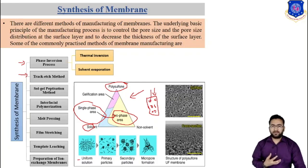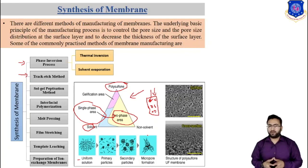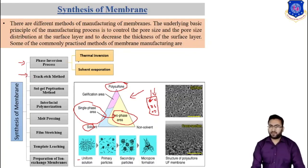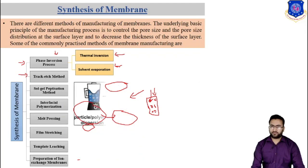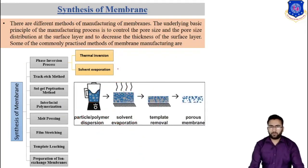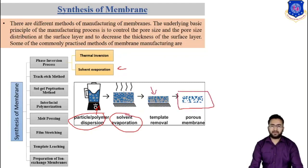If we remove this liquid, we will get pores on the membrane and we get a porous membrane. Now regarding the phase inversion process, there are various methods such as thermal inversion and solvent inversion process. In the solvent evaporation process, a particle and polymer dispersion solution is mixed to make an emulsion, then solvent evaporation takes place and we get pores, resulting in a porous membrane.